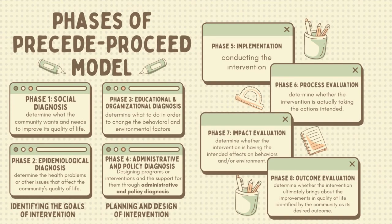These are the phases of the PRECEDE-PROCEED model. Phase one is Social Diagnosis — it determines what the community wants and needs to improve its quality of life. Here, we are focused on identifying the wants and needs of our community, from which we can identify our desired outcome. Phase two is the Epidemiological Diagnosis — it determines the health problems or other issues that affect the community's quality of life. In phase two, we look for issues and factors that may cause or influence the outcome identified in phase one.